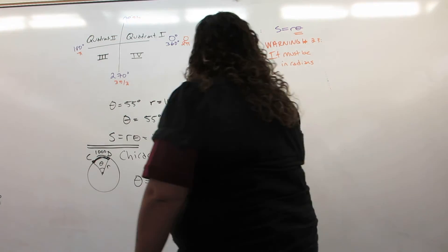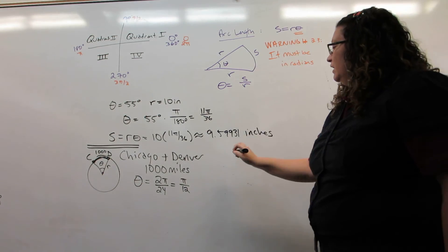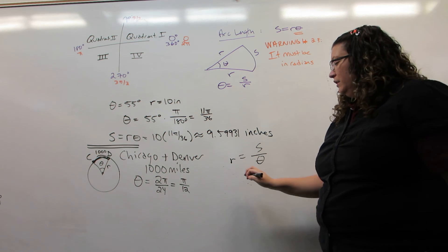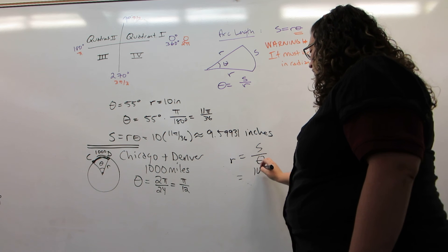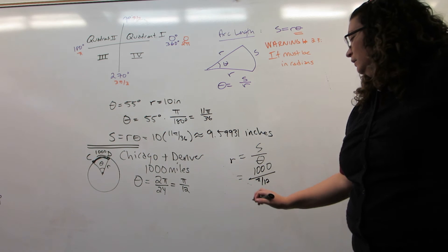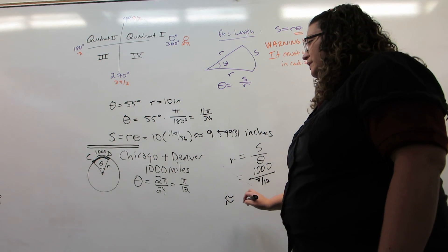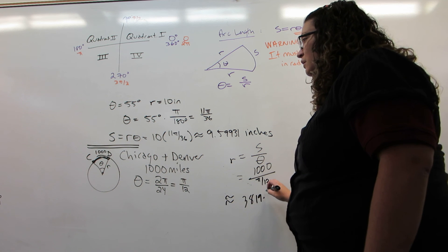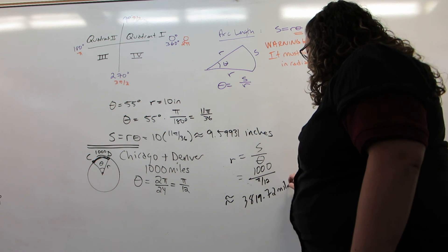Now, if we want to use this formula to calculate radius, it says that radius will be s divided by theta. In this case, that's 1,000 divided by pi over 12. That works out to be approximately 3,819.72 miles.